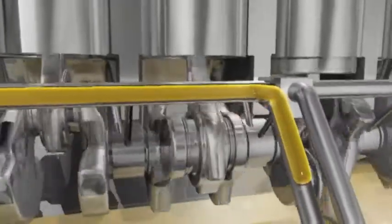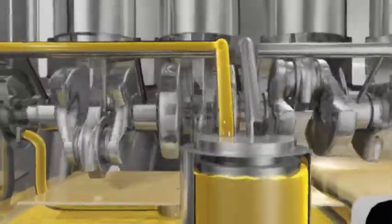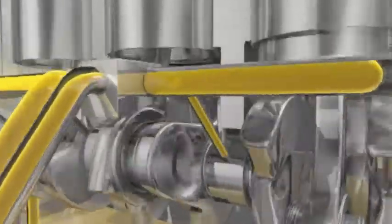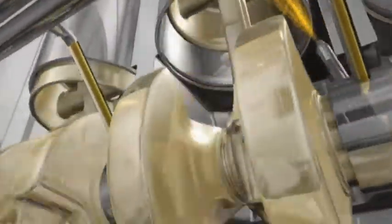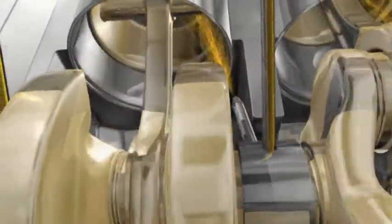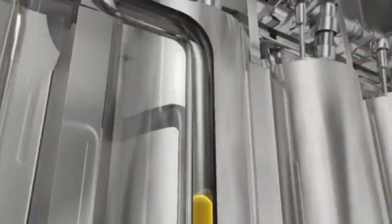The filter removes any large particles from the oil which can cause wear and blockages. From here, the oil is fed into the crankshaft to lubricate the bearings and is sprayed onto the underside of the piston and cylinder walls to provide essential cooling and protection.